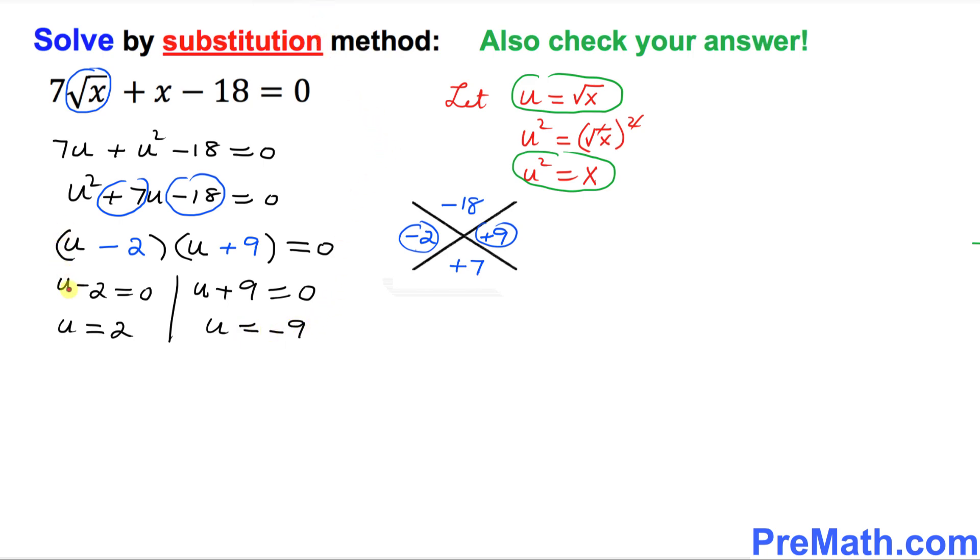But we know that u, in our case, is simply square root of x. So I'm going to put down square root of x equals to 2. Now, I want you to take the square on both sides because we want to undo this square root. I'm going to just square both sides. So this square root and square, they undo each other. They cancel each other out. So we simply got x equals to 4.